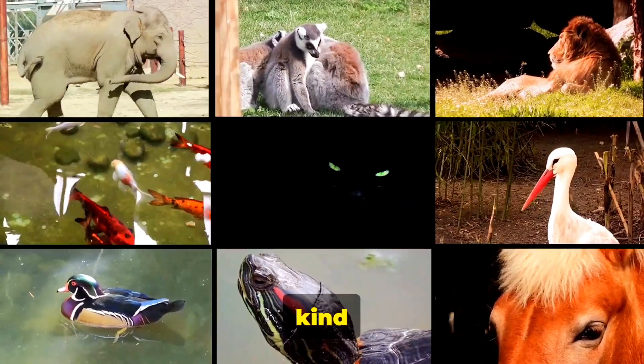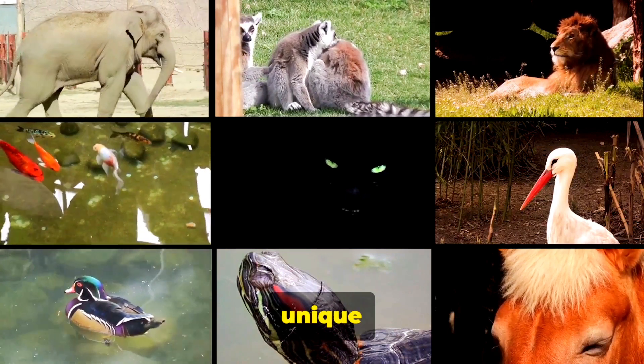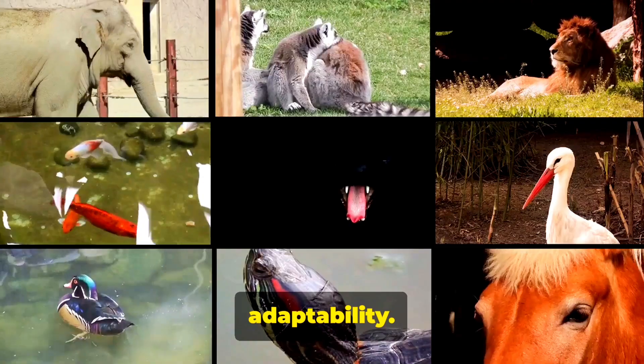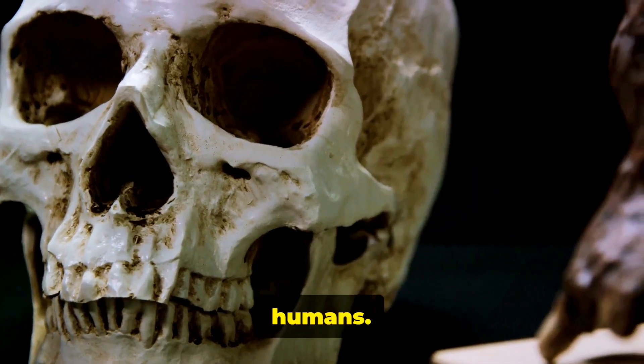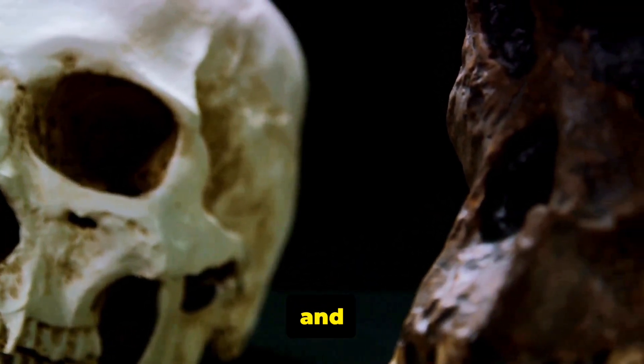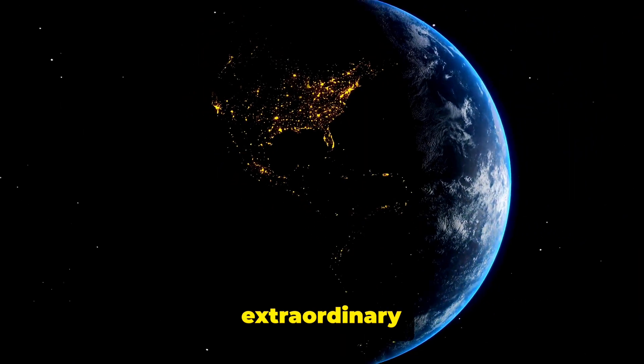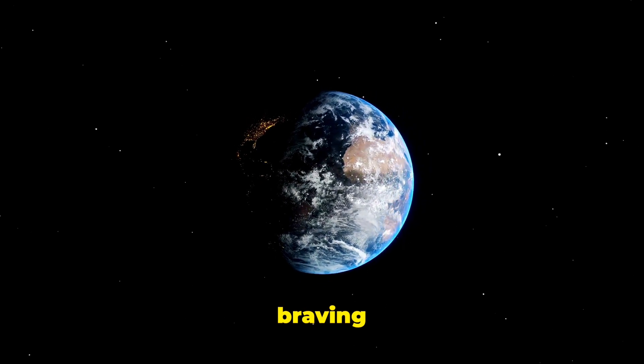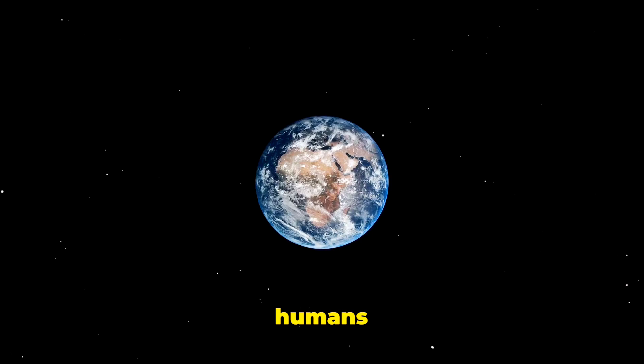In due course, a new kind of creature emerged. Mammals. Warm-blooded with hair or fur and a unique way of raising their young, mammals brought with them a new level of complexity and adaptability. Among these mammals, one lineage would take a path that led to us, humans, we who have the power to ponder our own existence, to question our origins and to shape our destiny. The evolution of life is a tale of extraordinary transformation, of simple cells evolving into complex organisms, of life braving the harsh land from the safety of the seas, of mammals rising and of humans emerging.